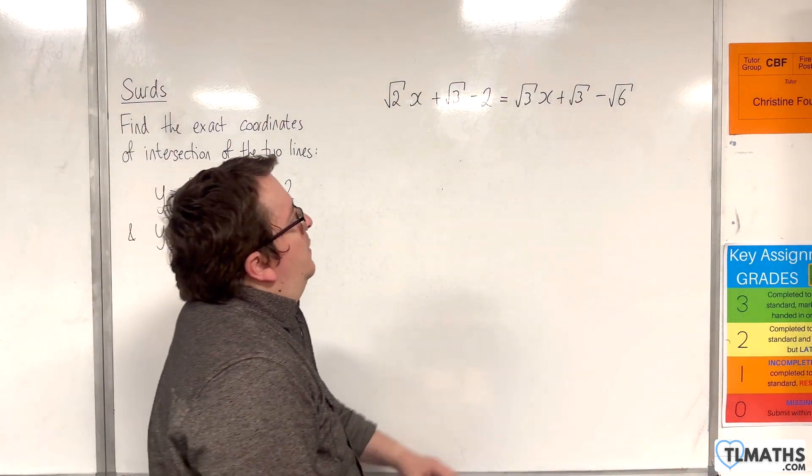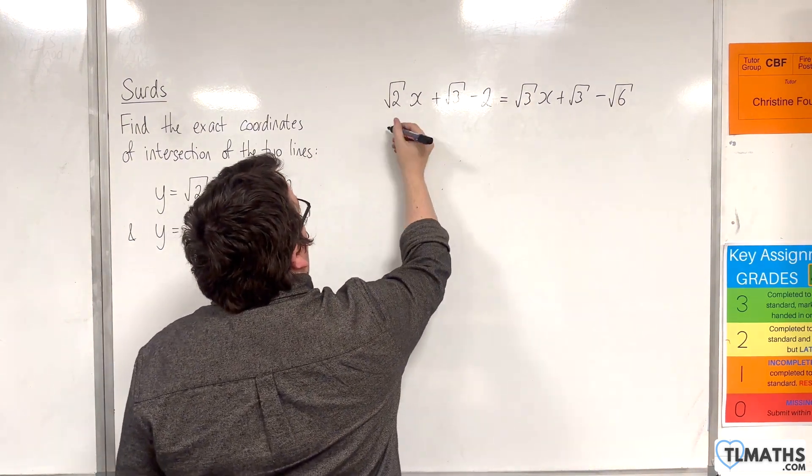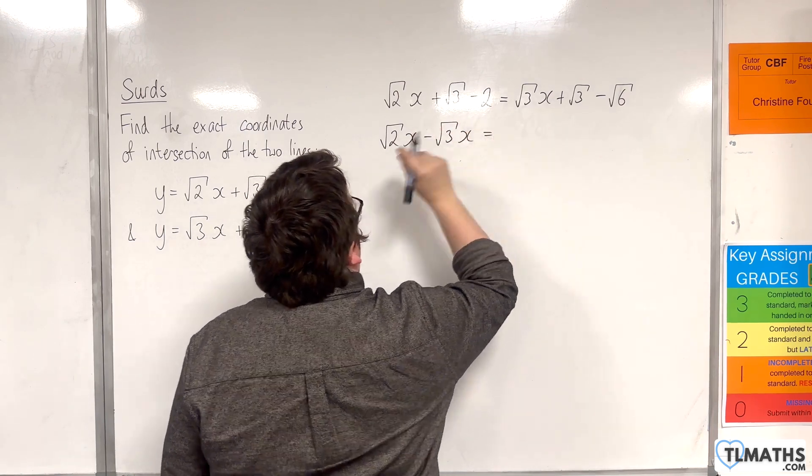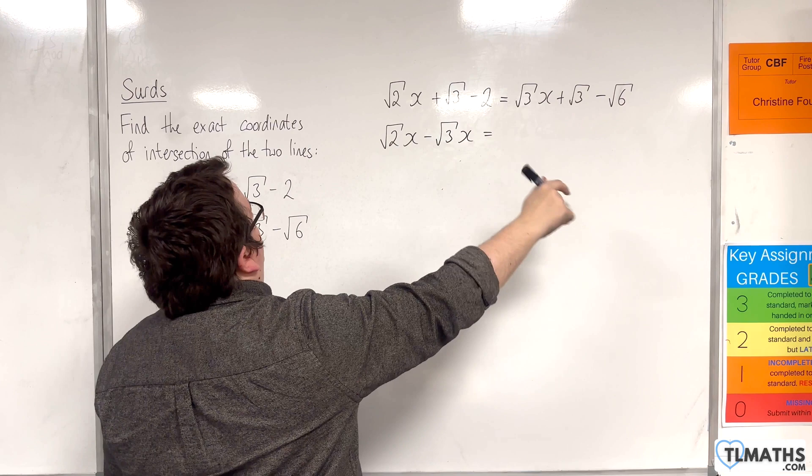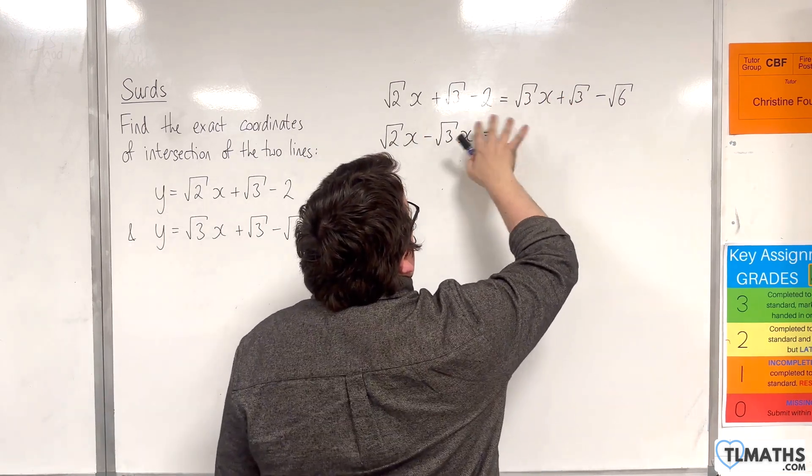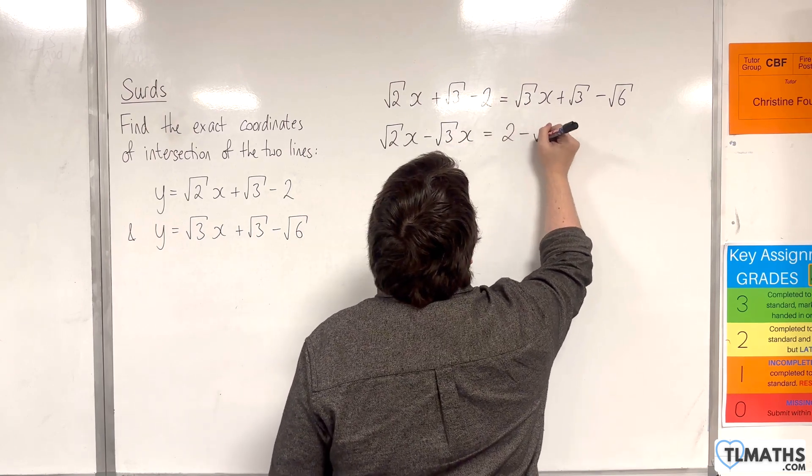Now I want to get all of the x's onto one side of the equation, so I'm going to take root 3x from both sides, and I'll have root 2x take away root 3x. And I'll move everything else onto the right side. Now I've got root 3 and root 3, so they can go. Take those from both sides, and I can add 2 to both sides to get 2 take away root 6.